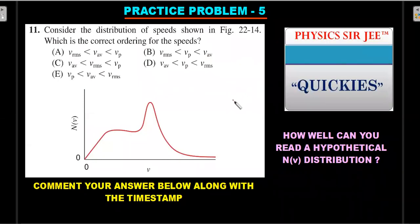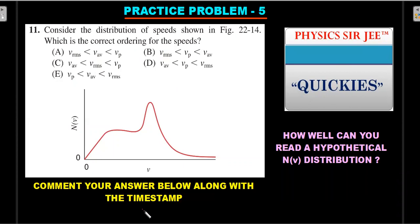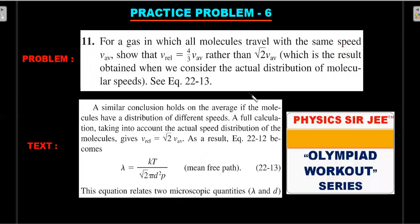Practice problem five: given a hypothetical distribution, five options present different orderings of the characteristic speeds — determine which best represents the correct ordering. Many students get this wrong, so comment your answer with the timestamp.